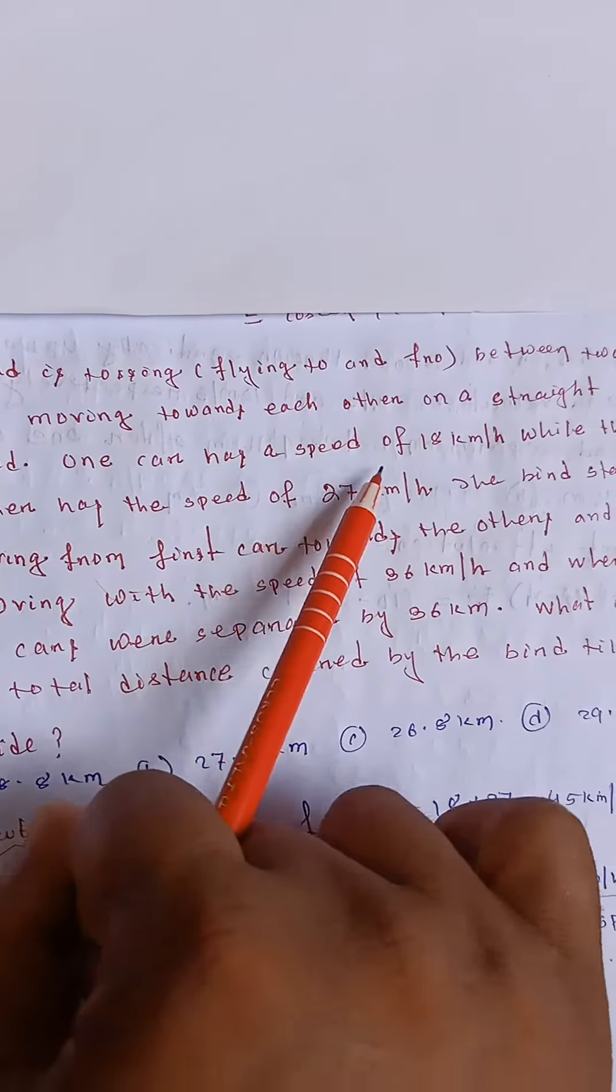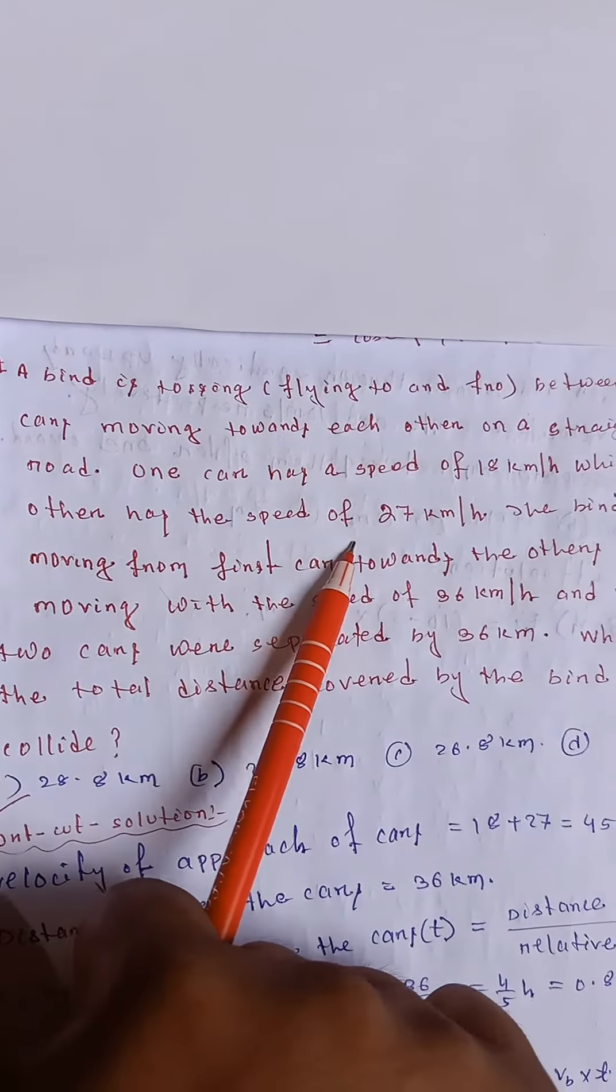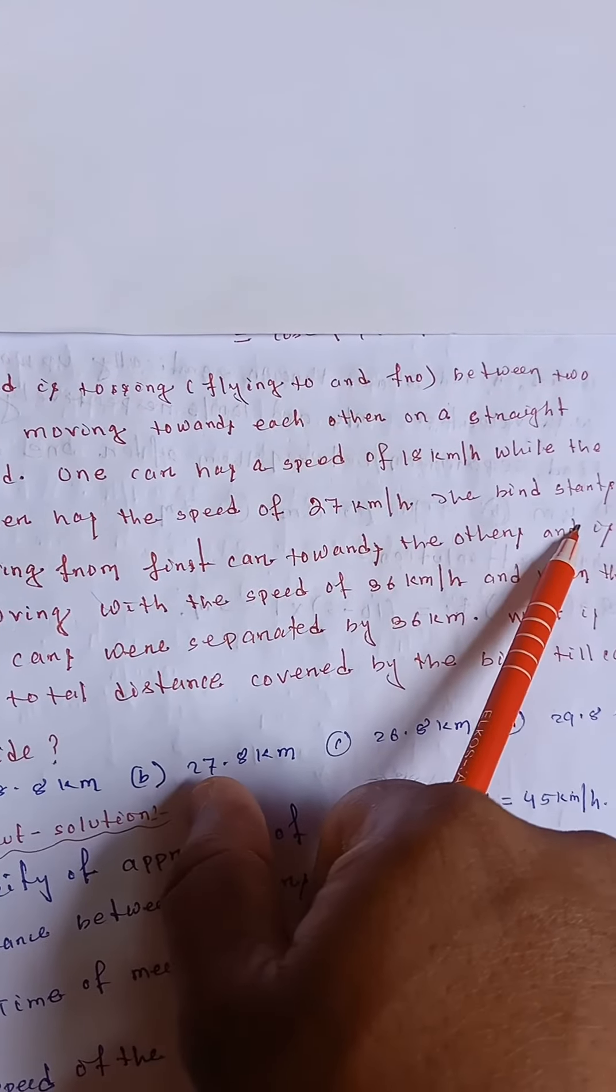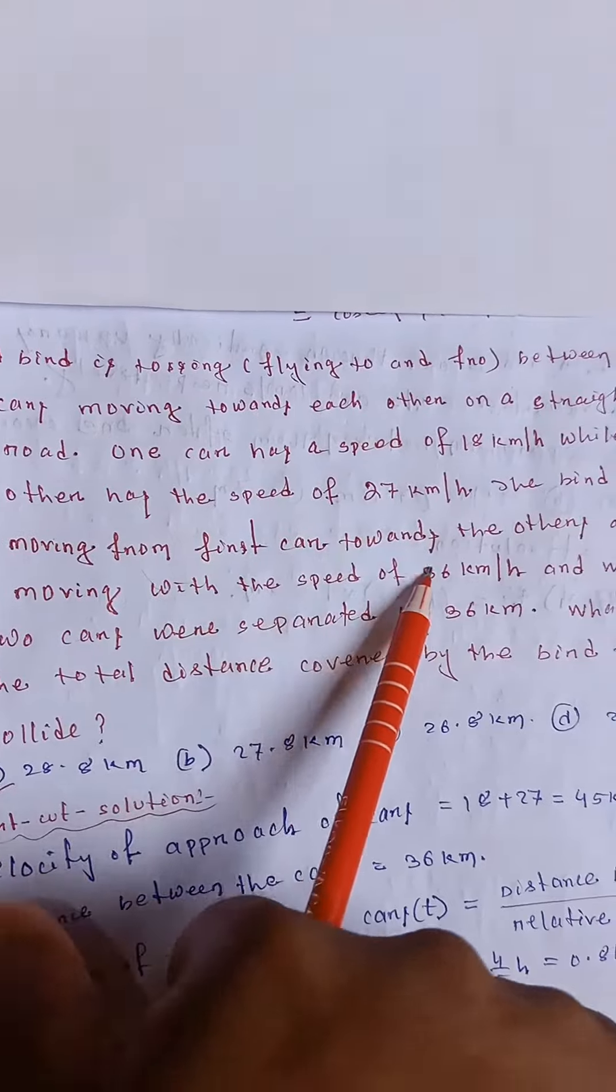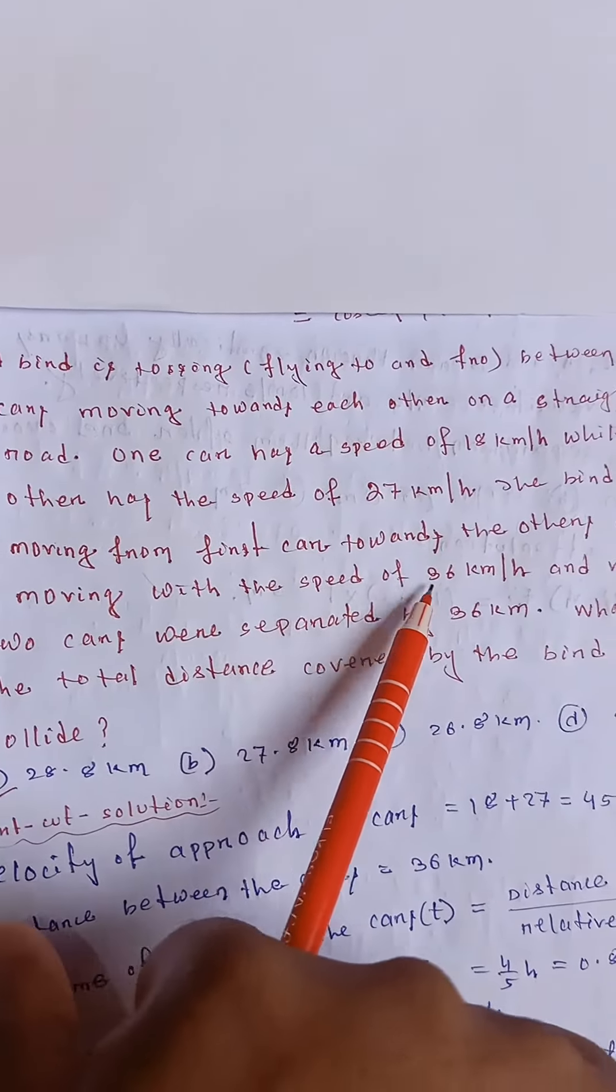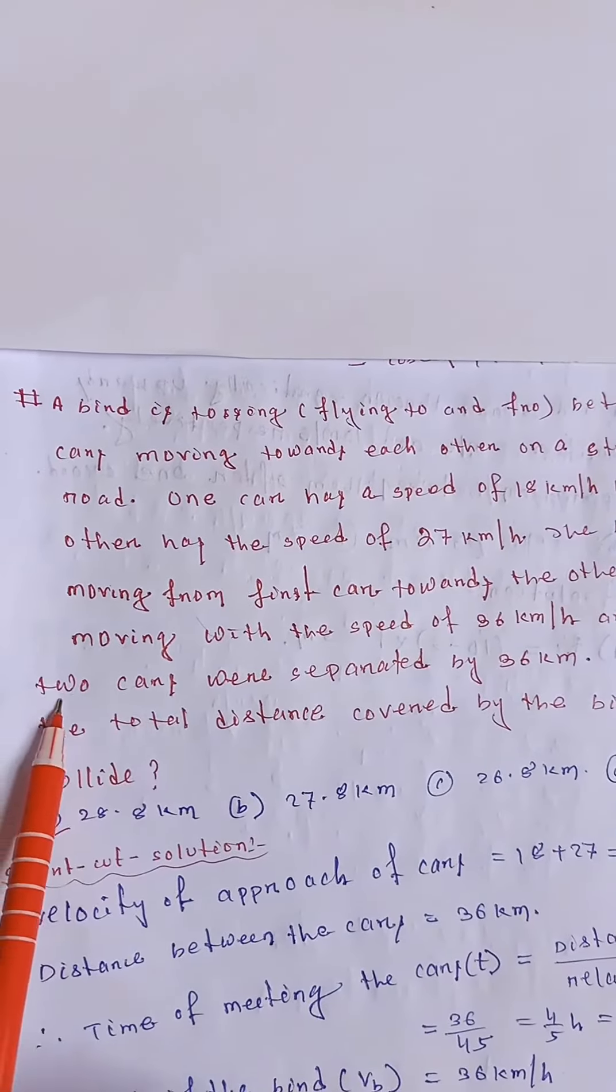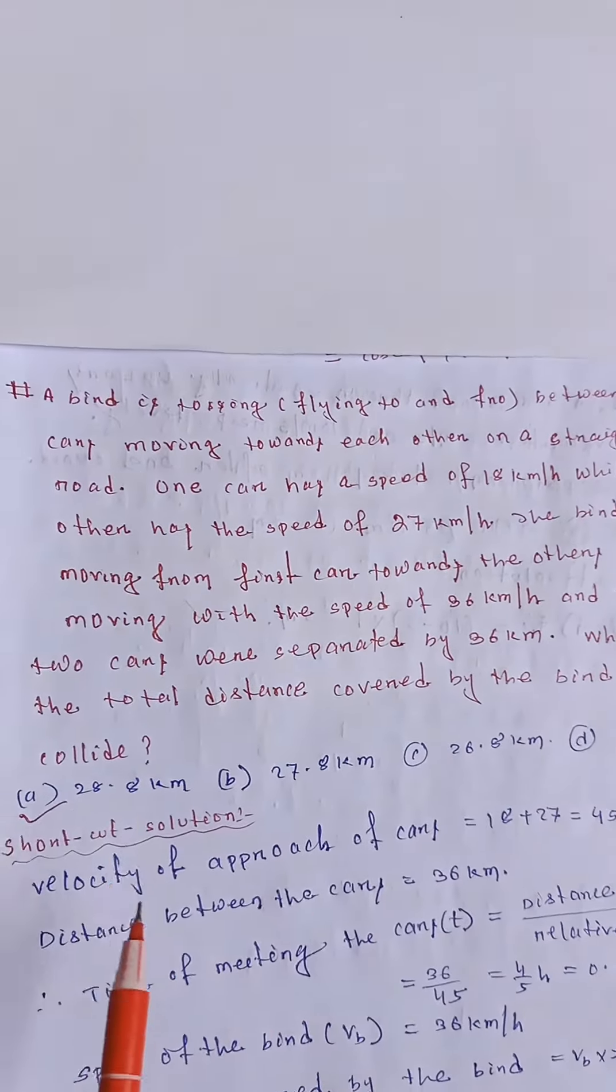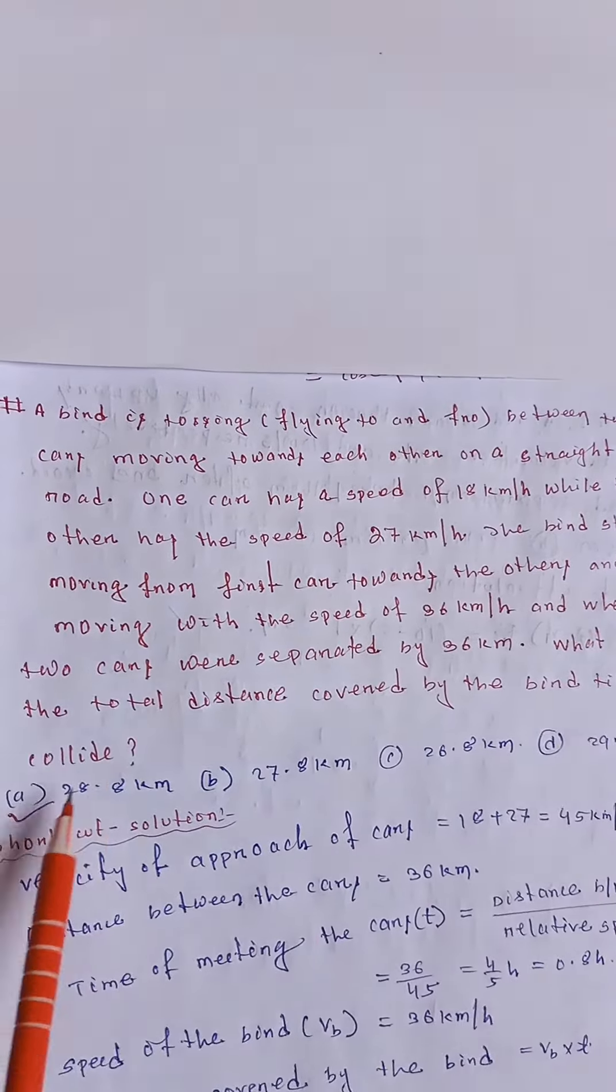One car has a speed of 18 km per hour while the other has the speed of 27 km per hour. The bird starts moving from first car towards the other and is moving with the speed of 36 km per hour. And when the two cars were separated by 36 km, what is the total distance covered by the bird till cars collide?